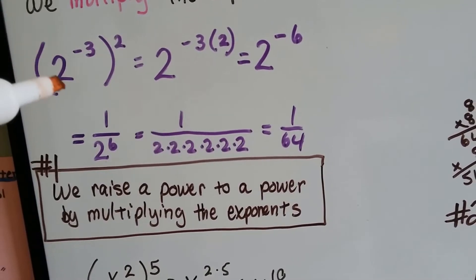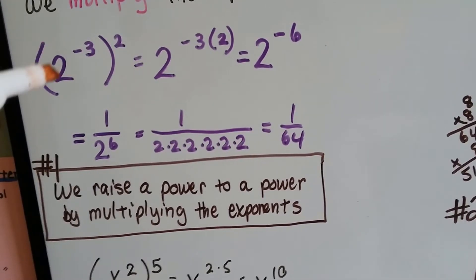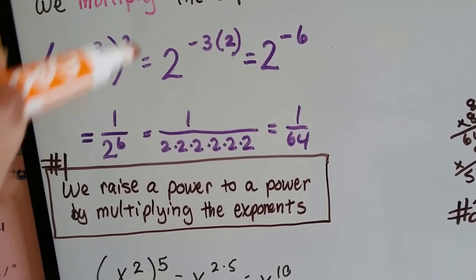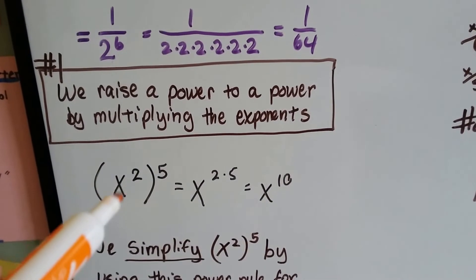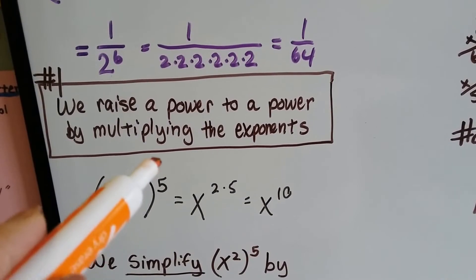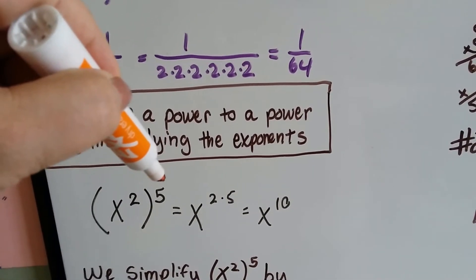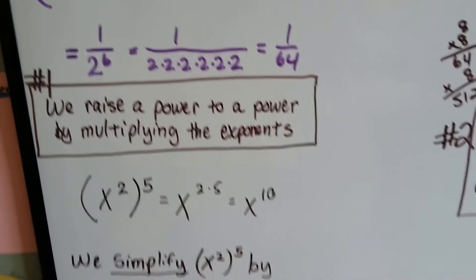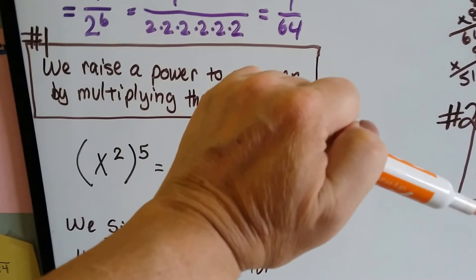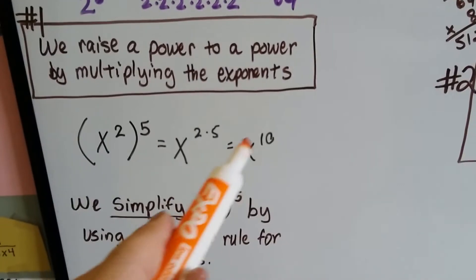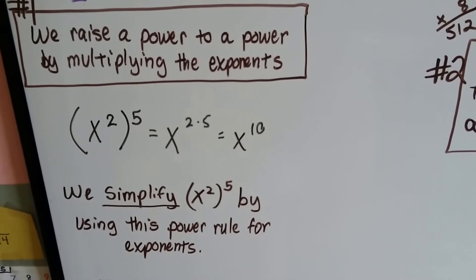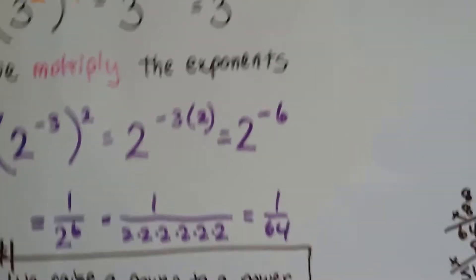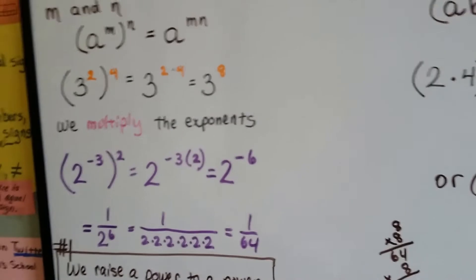This rule says we raise a power to a power by multiplying the exponents. So 2 to the negative 3rd is 2 being raised to the power of negative 3, and inside the parentheses it means this whole thing is being raised to the second power. If we had x to the second power inside parentheses and a little 5 for an exponent on the outside, it would mean x to the 2 times 5, or x to the 10th. So if it said to simplify x squared to the 5th power, we would simplify it to x to the 10th power using the power rule for exponents — just multiplying the exponents on the inside and outside of the parentheses.